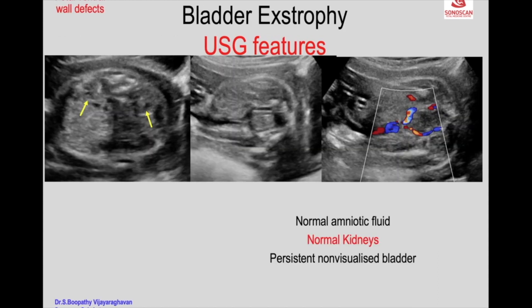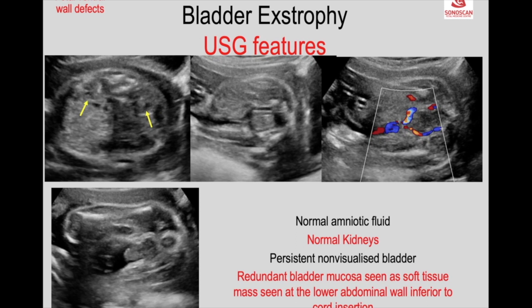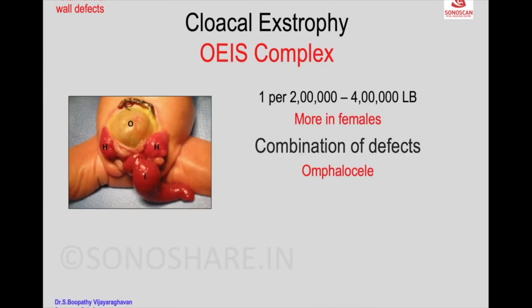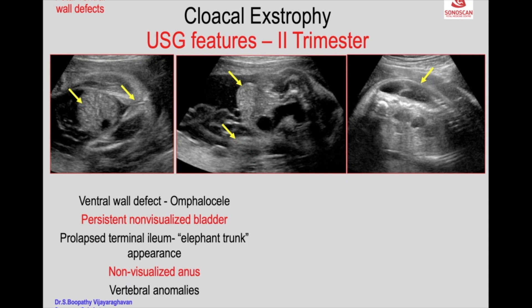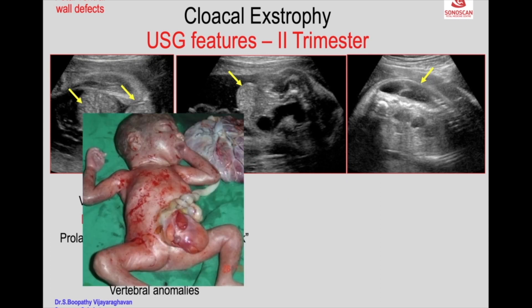OEIS complex features a persistent non-visualized bladder despite normal kidneys and normal amniotic fluid. You may also see a redundant bowel. Omphalocele and exstrophy of cloaca are seen, which presents as exstrophy of bladder, rectum, and lower genitourinary tract, along with a myelomeningocele.